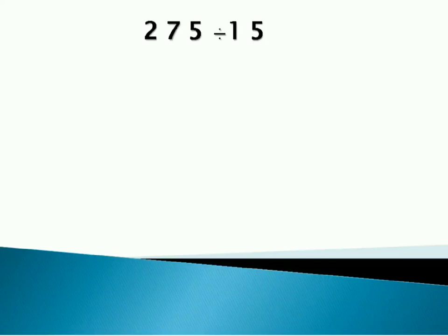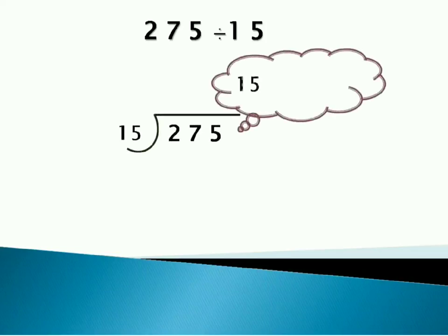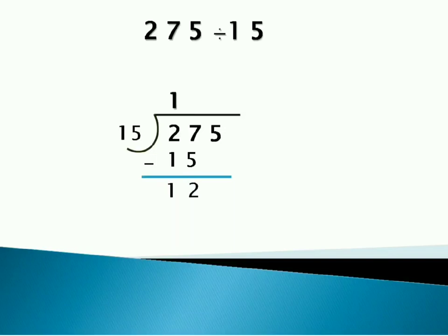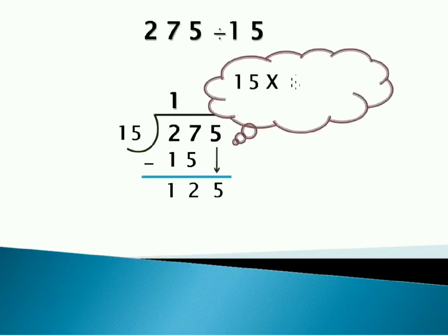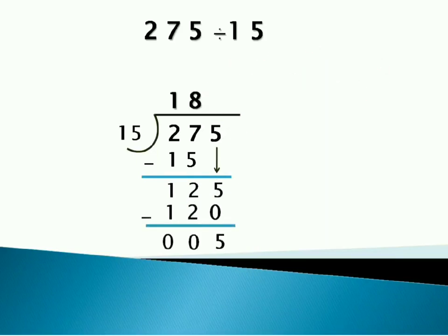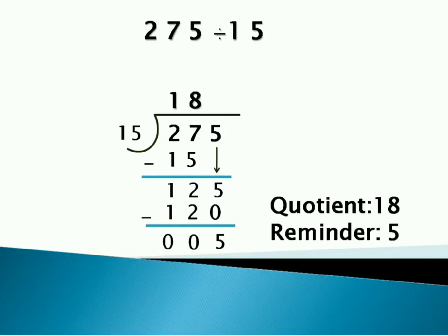Now a bit complex example. 275 divided by 15. 15 ones are 15. So write 1 at the answers place and subtract 15 from 27. 8 comes, 12. Then take the 5 down. So the number becomes 125. 15 eights are 120. So write 8 at the answers place and subtract 120 from 125. Here quotient is 18 and remainder is 5.